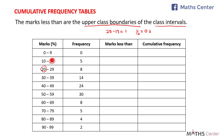To get the upper class boundaries, we add 0.5 to the upper class limits. The first interval is 0 to 9, and the upper class limit is 9, so 9 plus 0.5 gives us 9.5. So the upper class boundary of 0 to 9 is 9.5. These upper class boundaries are the marks less than.